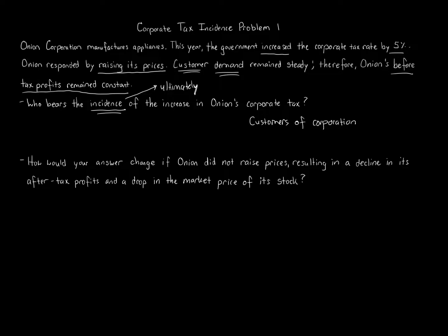The last policy element is efficiency, which deals with economics and elasticity. For inelastic products, a price change isn't as big a deal. If this manufactured appliance has inelastic demand, the tax rates are ultimately going to pass through to the customer. So the customers of Onion Corporation are the ones that bear the incidence in this specific example — not the shareholders, not the corporation, not the employees.